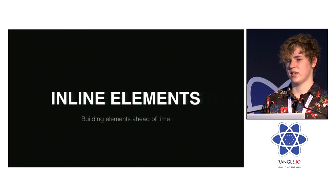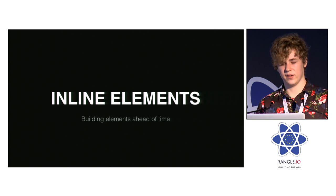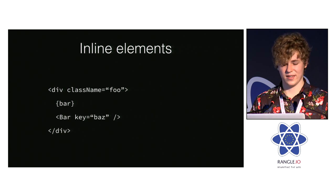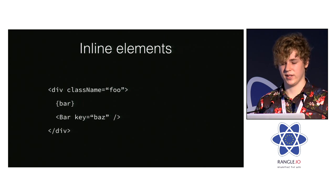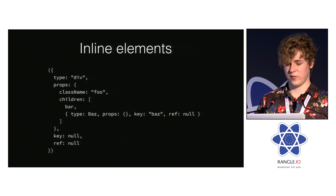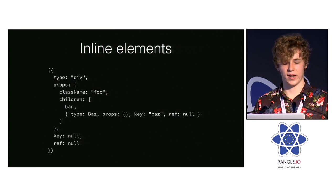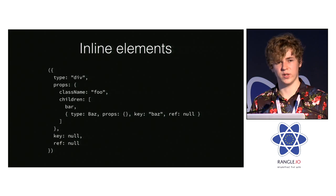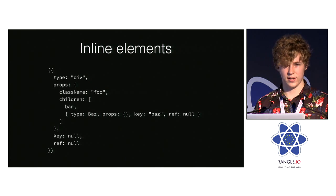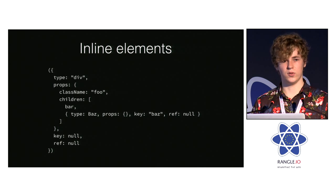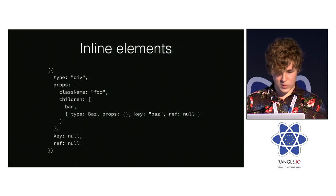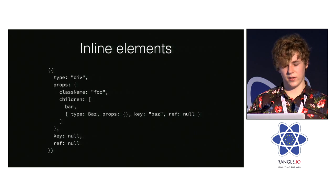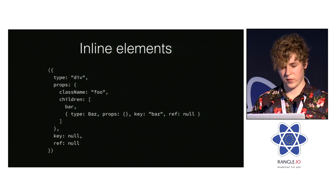Another optimization is pre-building elements ahead of time. We have a simple JSX element — a div with a className, an expression container containing bar, and a bar component with a key. This can be turned into a representation that does what React.createElement does under the hood, but ahead of time. This is only appropriate for production, since React.createElement throws helpful warnings in development. This can also be combined with constant hoisting to get additional performance wins.